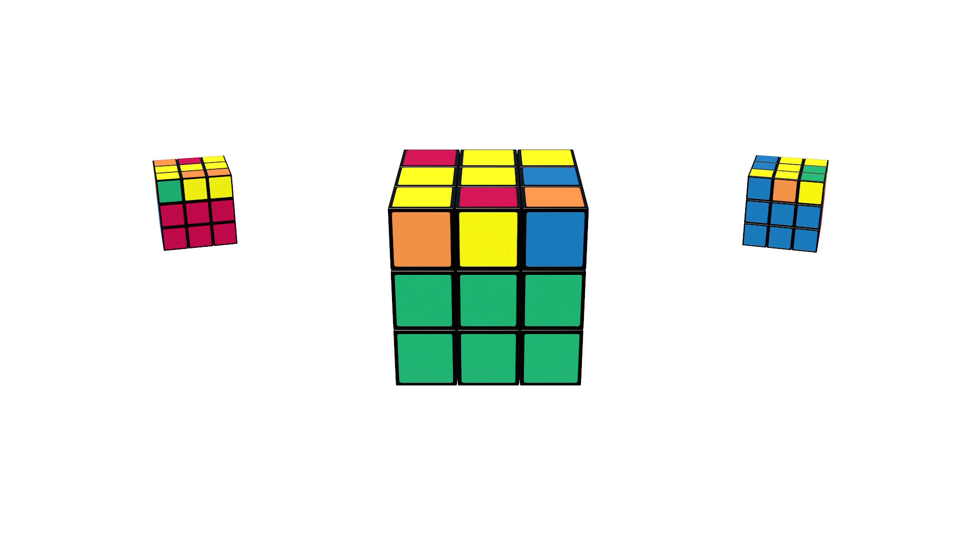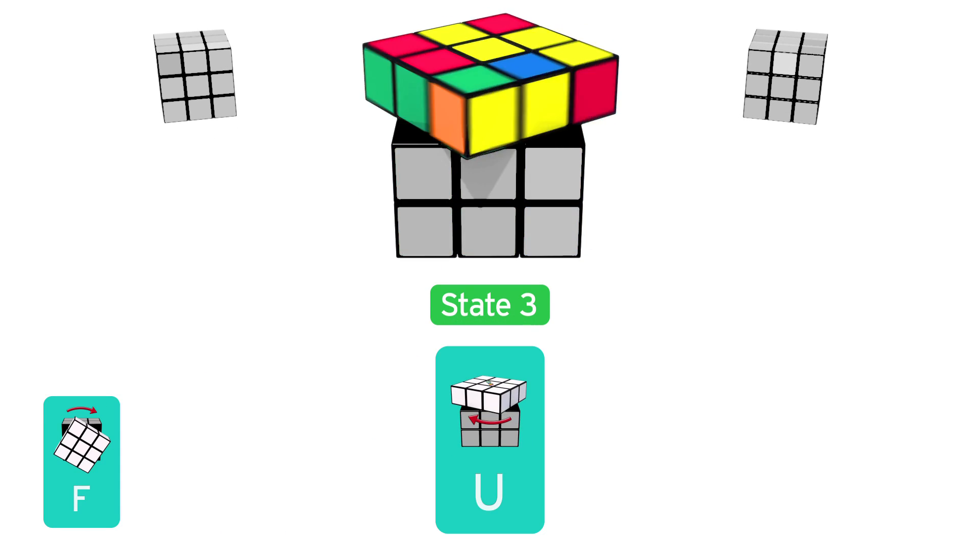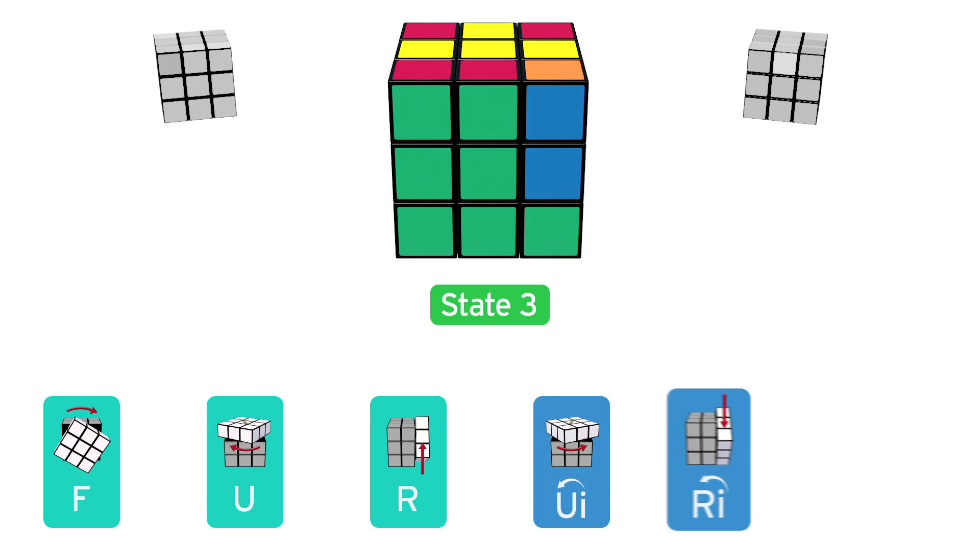If your cube is in State 3, with two yellow edge pieces forming a V shape, then do this: Front, Up, Right, Up inverted, Right inverted, Front inverted.